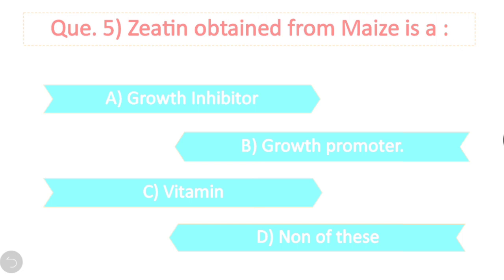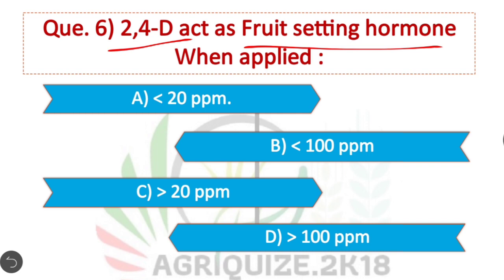Question 6: 2,4-D acts as a fruit-setting hormone when applied at less than 20 ppm. It acts as a fruit-setting hormone. Option A is correct.